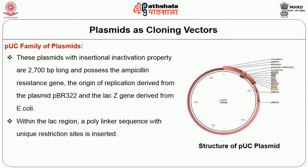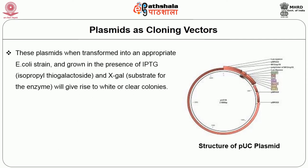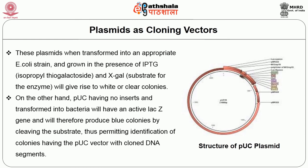Within the LAC region, a polylinker sequence with unique restriction sites is inserted. When DNA segments are cloned in this region of the PUC plasmid, the LACZ gene is inactivated. When these plasmids are transformed into an appropriate E. coli strain and grown in the presence of IPTG and X-gal — the substrate for the enzyme — they give rise to white or clear colonies. PUC having no inserts, when transformed into bacteria, will have an active LACZ gene and will produce blue colonies, permitting identification of colonies having PUC vector with cloned DNA segments.